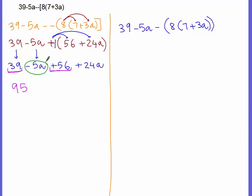Negative 5a plus 24a. So negative 5 plus 24, that would be positive 19a. Okay, and that right here is simplifying the expression.